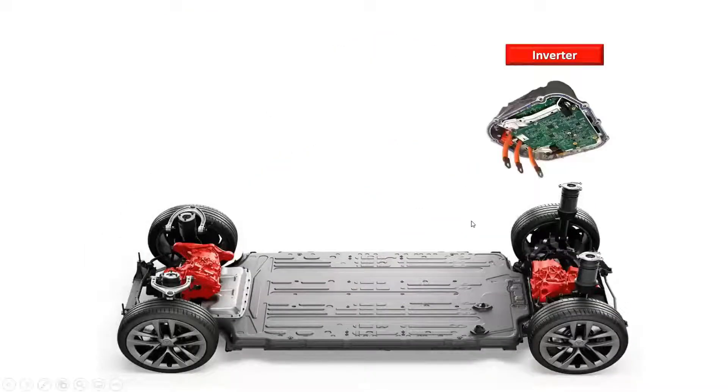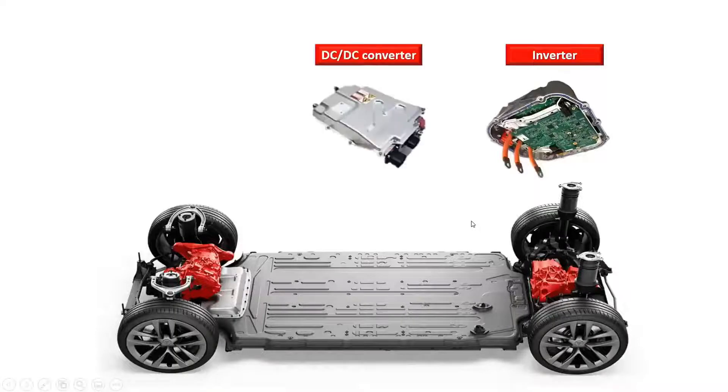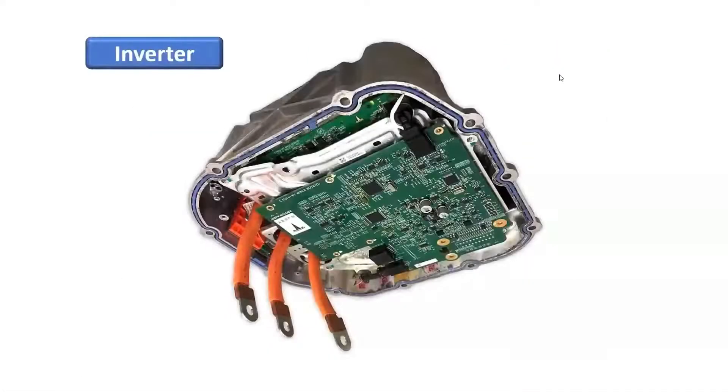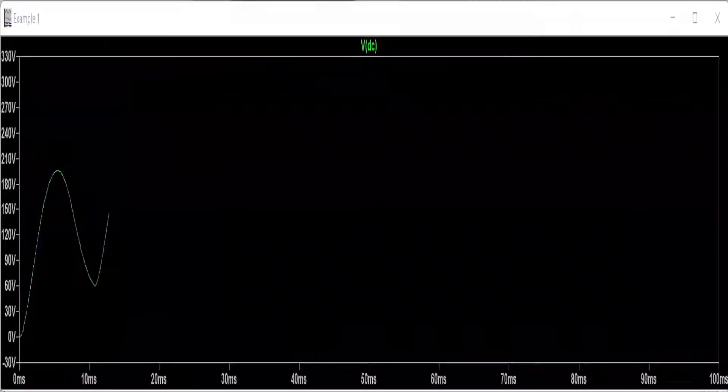The power electronics components of an electric vehicle include inverters, DC-DC converters, and chargers for plug-in electric vehicles. The inverter in an electric vehicle converts the DC energy from the battery pack to AC power to drive the electric motor.